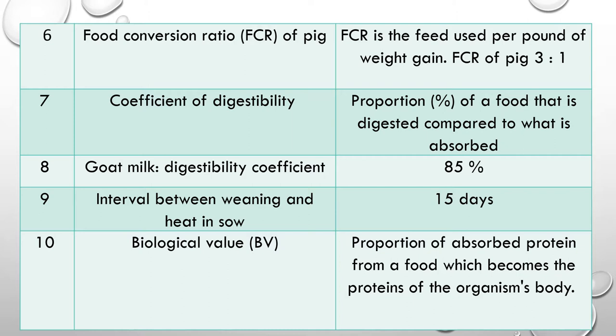Question 8: What is the digestibility coefficient of goat milk? The digestibility coefficient of goat milk is very high — 85%. Question 9: What is the interval between weaning and the next heat in a sow? The answer is 15 days — the sow comes into estrus 15 days after weaning of the piglets.